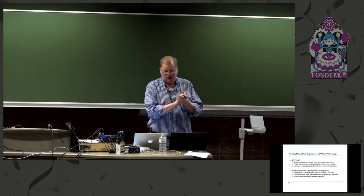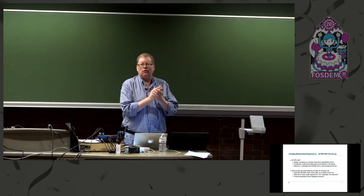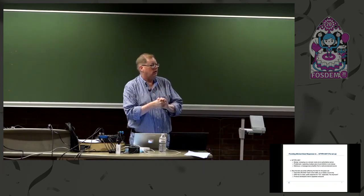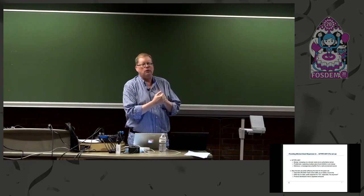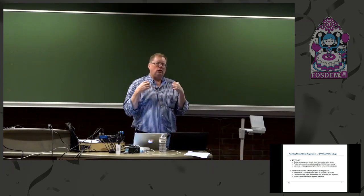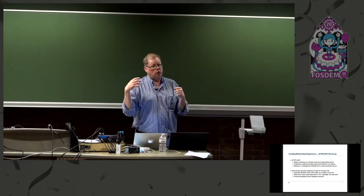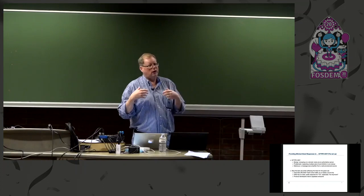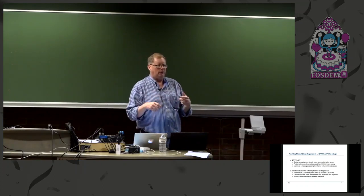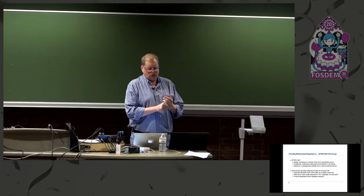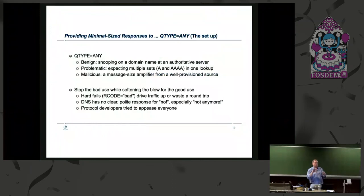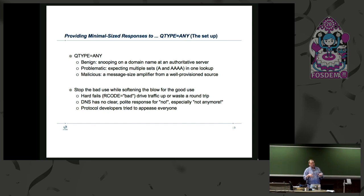So the document — why does it exist? The Q-type ANY is a feature of the original DNS. It's been around since the start and has basically three uses. One is benign: you can use it to get a lot of information about a name if you go to the authoritative server and ask it, and you get everything that's there. It has a problematic use because some people tried to use it with recursive servers, which don't get all of the records, so ANY and ALL became kind of confused — that was the first road to it being a problem.